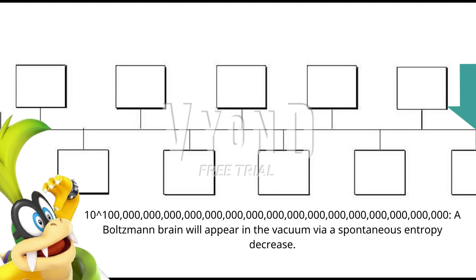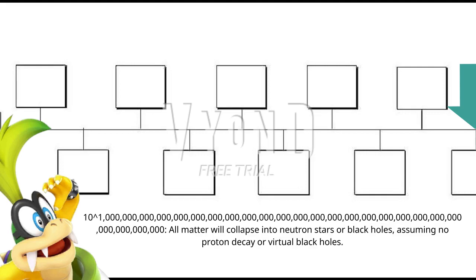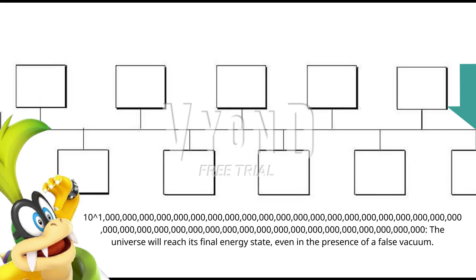Assuming no proton decay or virtual black holes: 10 to the 100 quindecillion — a Boltzmann brain will appear in the vacuum via a spontaneous entropy decrease. 10 to the 10 Quattrigentillion: all matter will collapse into neutron stars or black holes, assuming no proton decay or virtual black holes. 10 to the 1 Novemtrigentillion: the universe will reach its final energy state, even in the presence of a false vacuum.